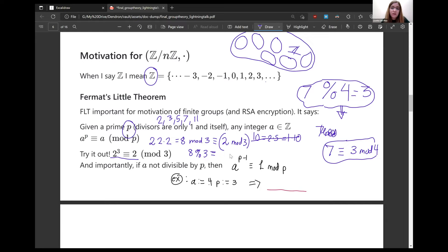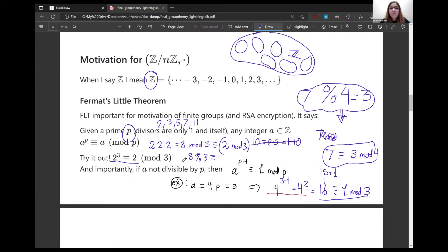More importantly, the other formulation of Fermat's little theorem is that if you have that A is not divisible by P, then A to the P minus one is congruent to one mod P. So I'll give you an example. Take A to be four, P to be three. So three minus one equals four squared equals 16. But that's congruent to one mod three, because this is 15 plus one.